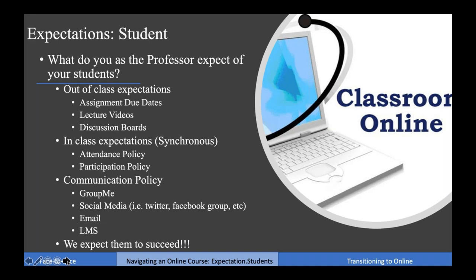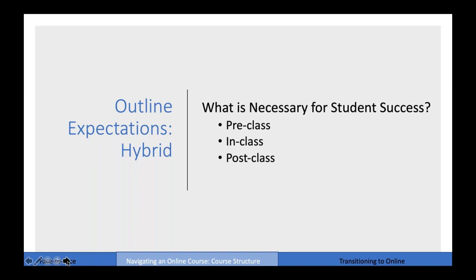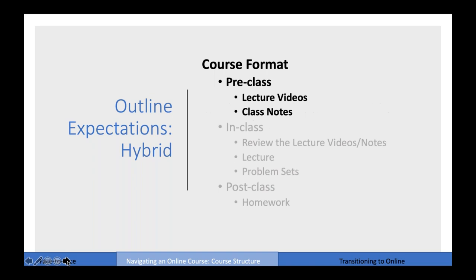It's important to communicate to students that we expect them to succeed. Here's an example from a course I taught online in the summer of 2019. Students have a clear outline of what's due and when. This course met Monday through Friday but only had synchronous live sessions on Tuesday and Thursday. Students could see exactly when homework was due and what they had to do regarding lecture videos. When thinking about student success, it's important to think about what's pre-class, in-class, and post-class.